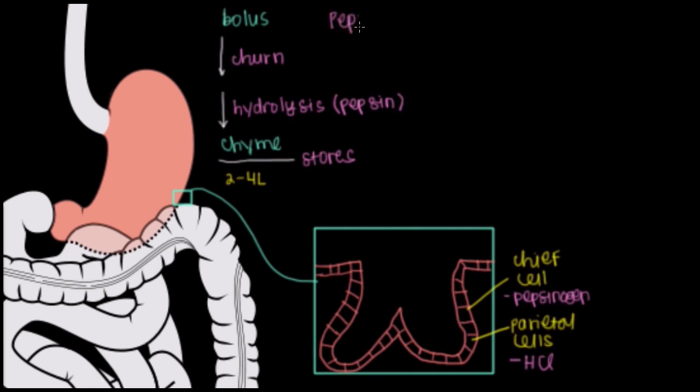But the pepsinogen, and whenever you see G-E-N at the end of a name, that means that it's almost there, it just needs to be processed. In order to turn pepsinogen into pepsin, we need hydrochloric acid, which will break down this protein to turn it into this active form that can then be used for hydrolysis.